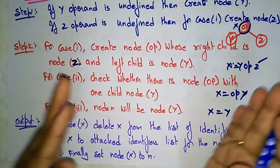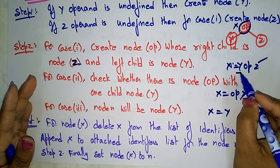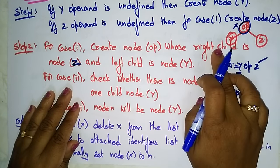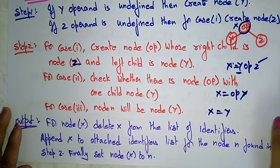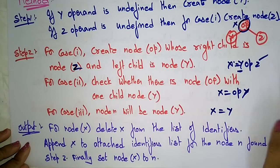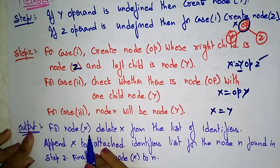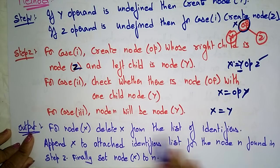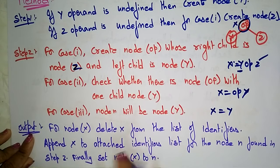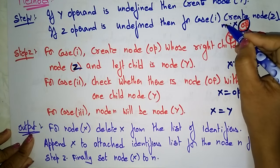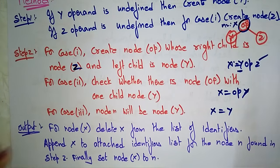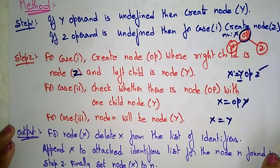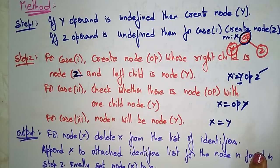The output step: delete x from the list of identifiers and append x to the attached identifier list for node n found in step two. Finally, set node x to n. If you see the example you will get a clear idea. In the next video I'll explain DAG examples for the Directed Acyclic Graph. Thank you.